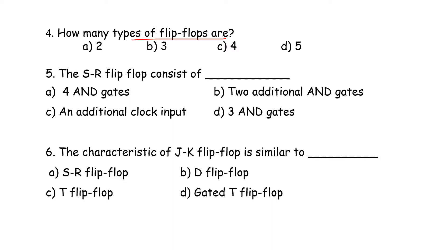Next question: How many types of flip-flops are there? We have already discussed flip-flops. The D flip-flop is an advanced version of the SR flip-flop. The JK flip-flop is also an advanced version of the SR flip-flop. The T flip-flop has also been discussed before.